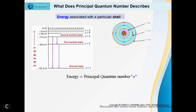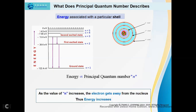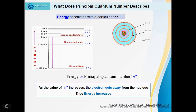Energy is directly proportional to the principal quantum number. That means as the value of n increases, the electron gets farther away from the nucleus, and thus the energy increases. The energy level closer to the nucleus will have the lower energy. As n increases, the electron has higher energy and is therefore less tightly bound to the nucleus.